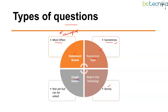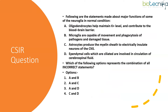Coming to graph-based questions — if we scan through previous year questions, we usually don't find graph-based questions related to nervous system. However, there are graphs related to action potential, so in future they might ask a graph-based question. We should be prepared for graph-based questions as well.